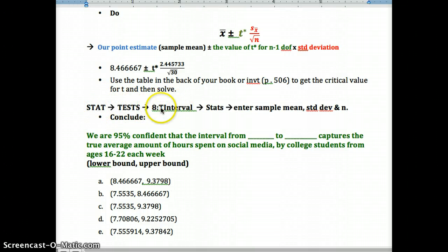Check your work. You need to be able to find that t value. So plug that in. Check your work by using this calculator function. Stat, test, go to 8, t interval. Enter your sample mean, standard deviation, and n. And then conclude by answering this multiple choice. This would be your first fill-in. The upper bound would be your second. We are 95% confident that the interval from lower bound to upper bound captures the true average amount of hours spent on social media by college students from ages 16 to 22 each week. Pause now. Look over your formulas and answer this multiple choice.